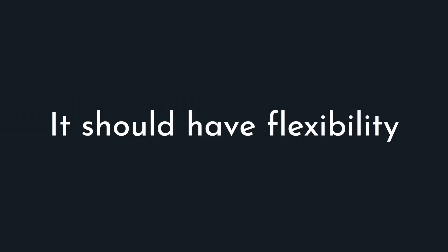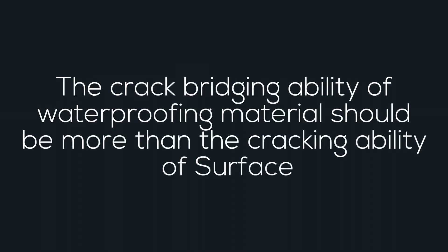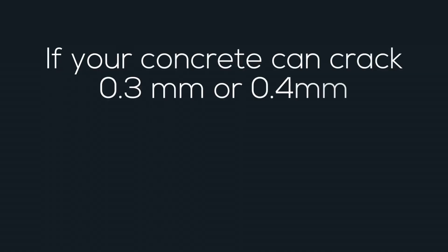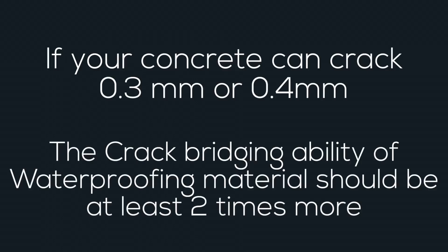The second property is flexibility — it should not crack along with any cracks that happen on your surface. This is called crack bridging ability. The crack bridging ability of your waterproofing material should be more than the cracking ability of your surface. If your concrete can crack 0.3 to 0.4 mm, your waterproofing material's crack bridging ability should be at least 80 to 90% more than the cracking ability of your concrete.